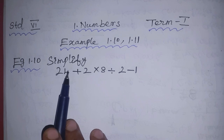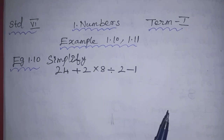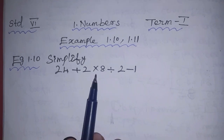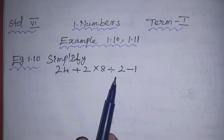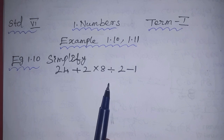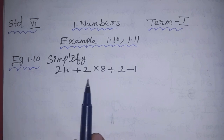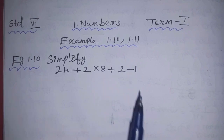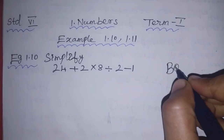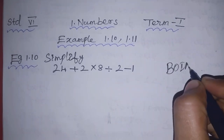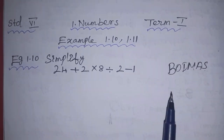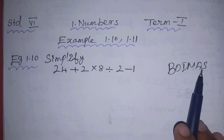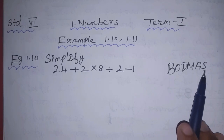Let's simplify this example: 24 plus 2 into 8 divided by 2 minus 1. We will see different operations: Brackets, Of, Division, Multiplication, Addition, and Subtraction.